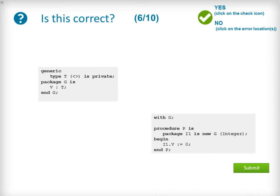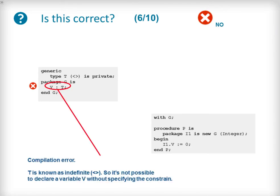We now introduce a generic package with a specification that names the indefinite private type T in its generic contract. The procedure P instantiates G with an integer argument and then accesses the V variable from the package. The code is incorrect and will fail to compile due to T being an indefinite type, so it must be constrained at the point of generic unit instantiation.